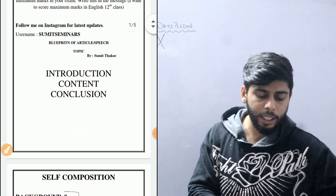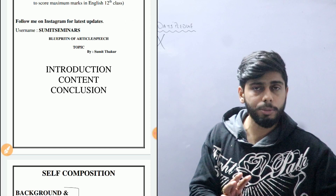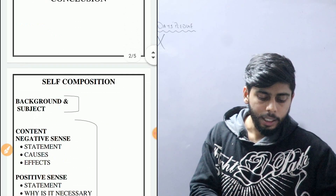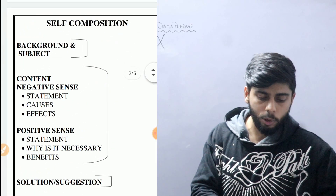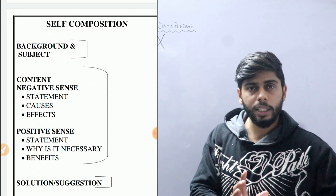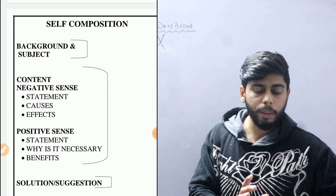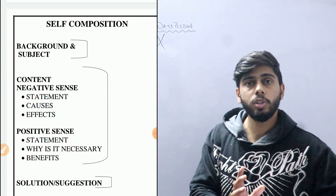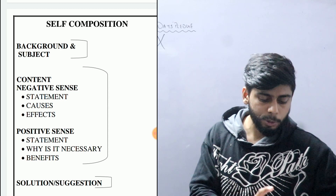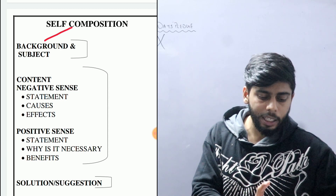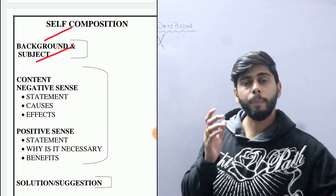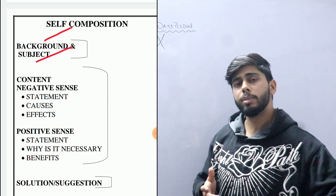An article can be divided into and written in three paragraphs. For self-composition, if I have an article, the first paragraph covers two points: the first point is background, and the second point is subject. So background relates to the subject.